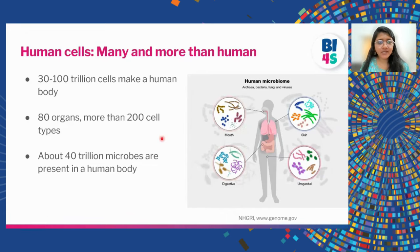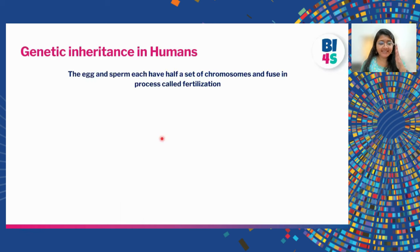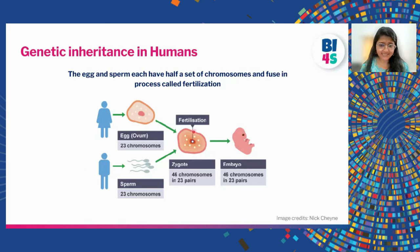Genetic inheritance in humans involves two germ cells: the egg from the female, carrying 23 chromosomes, and the sperm from the male, also carrying 23 chromosomes. They fuse together in a process called fertilization, making 46 chromosomes that will form a full organism — the first stage is called an embryo, which then develops into a whole human being.